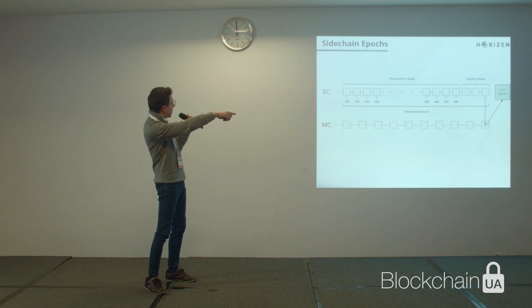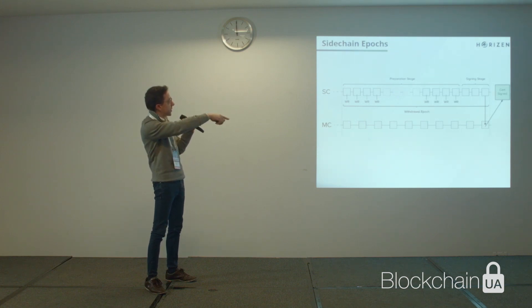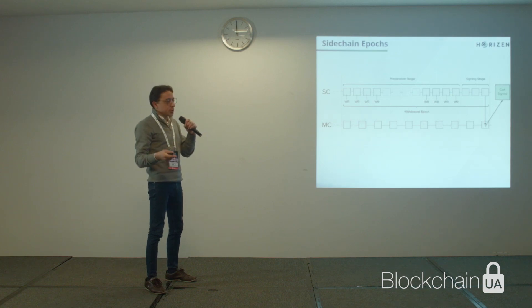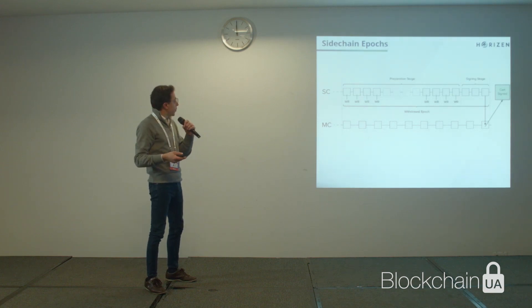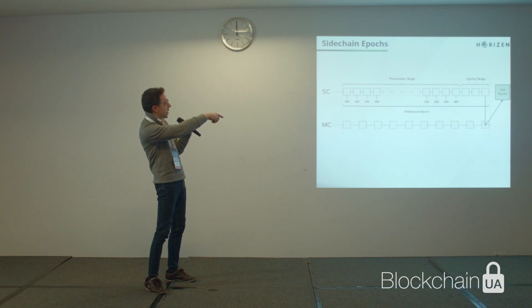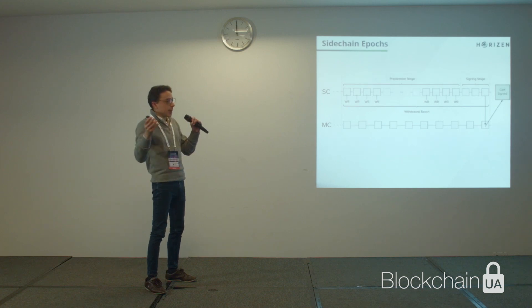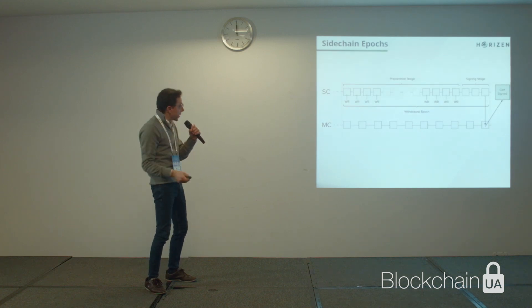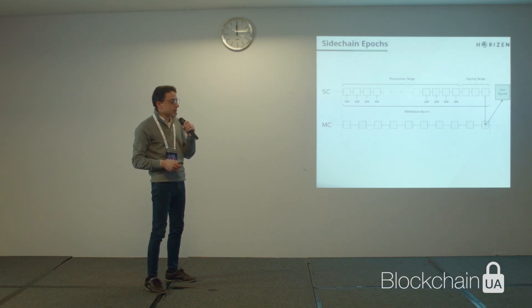As we can see in the scheme, above we have the sidechain with its blocks, and there is a withdrawal epoch split into two parts: preparation stage and signing stage. Users who want to withdraw some coins from the sidechain send withdrawal requests during the preparation stage. They are then collected together, aggregated, signed by the corresponding set of certifiers, and the certificate is sent to the main chain.